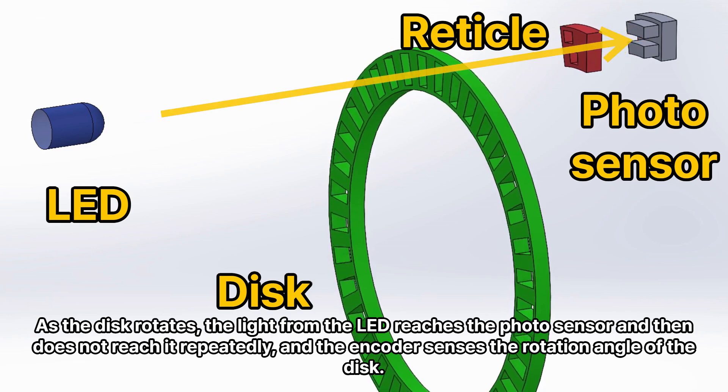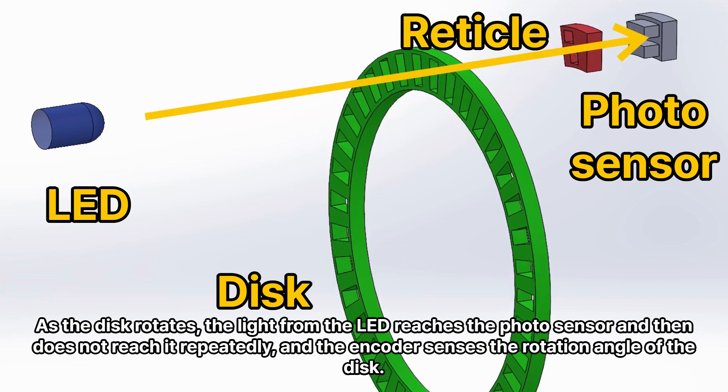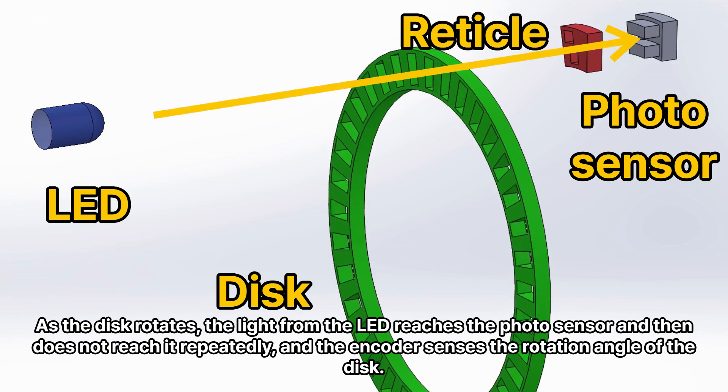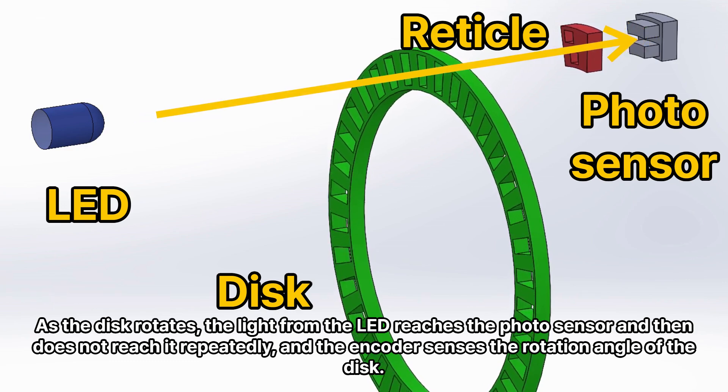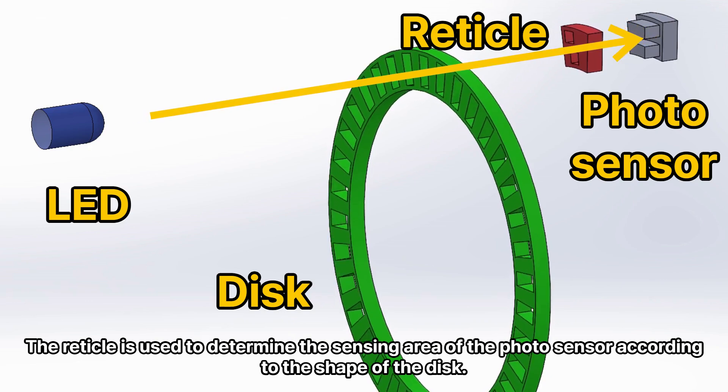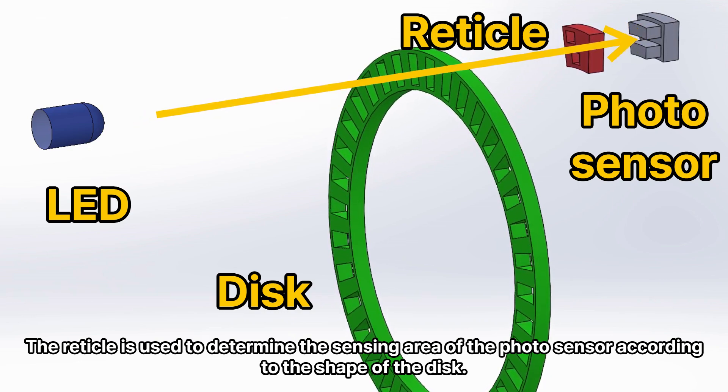As the disk rotates, the light from the LED reaches the photosensor and then does not reach it repeatedly, and the encoder senses the rotation angle of the disk.